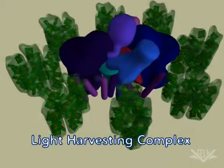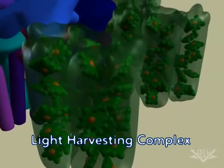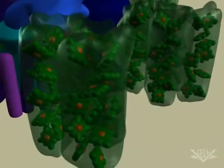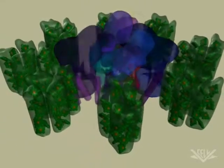Surrounding the reaction center are light-harvesting chlorophyll binding proteins. These proteins provide a way to harness the unique energy contained in light.